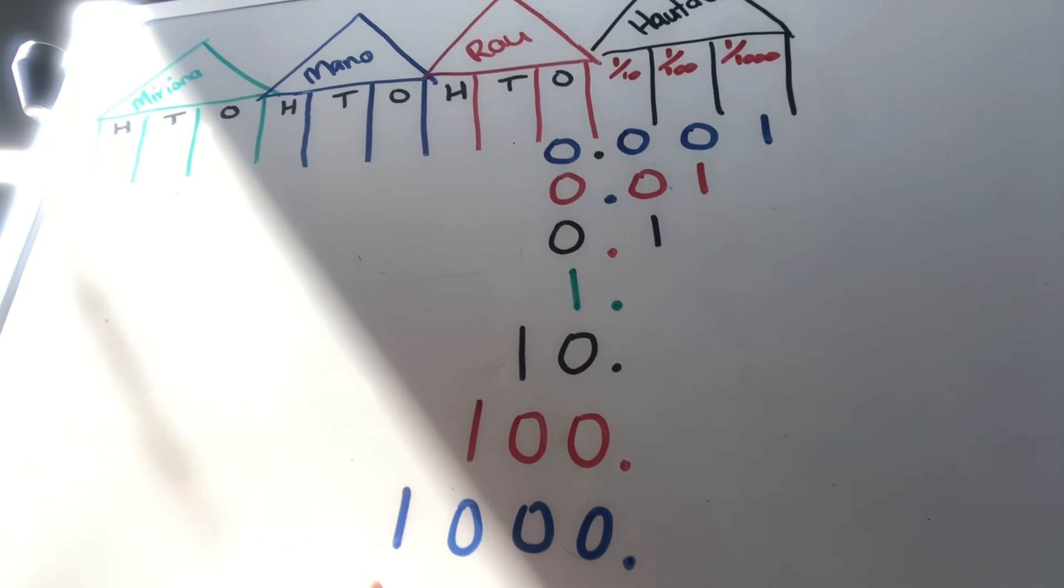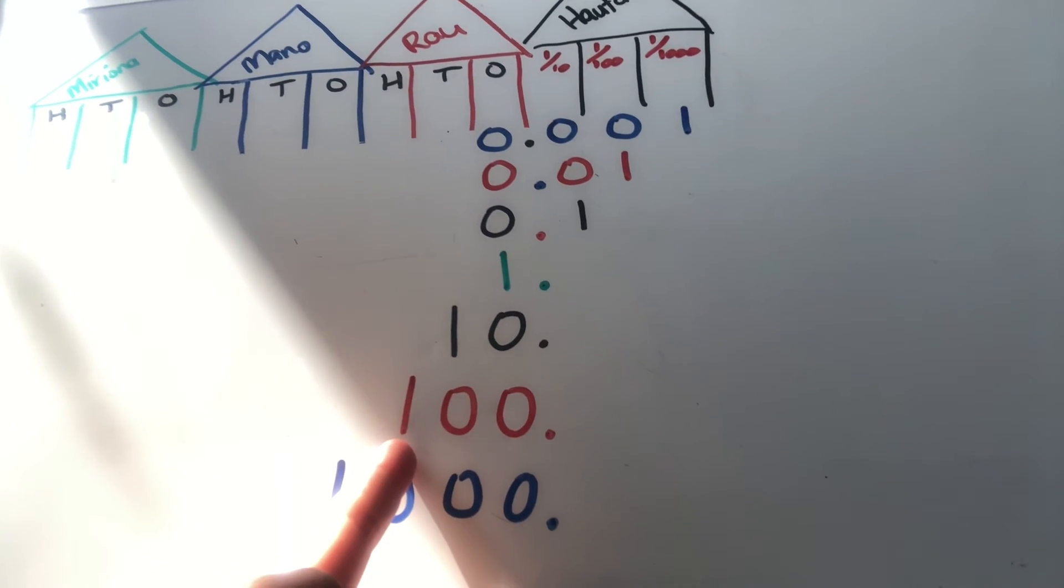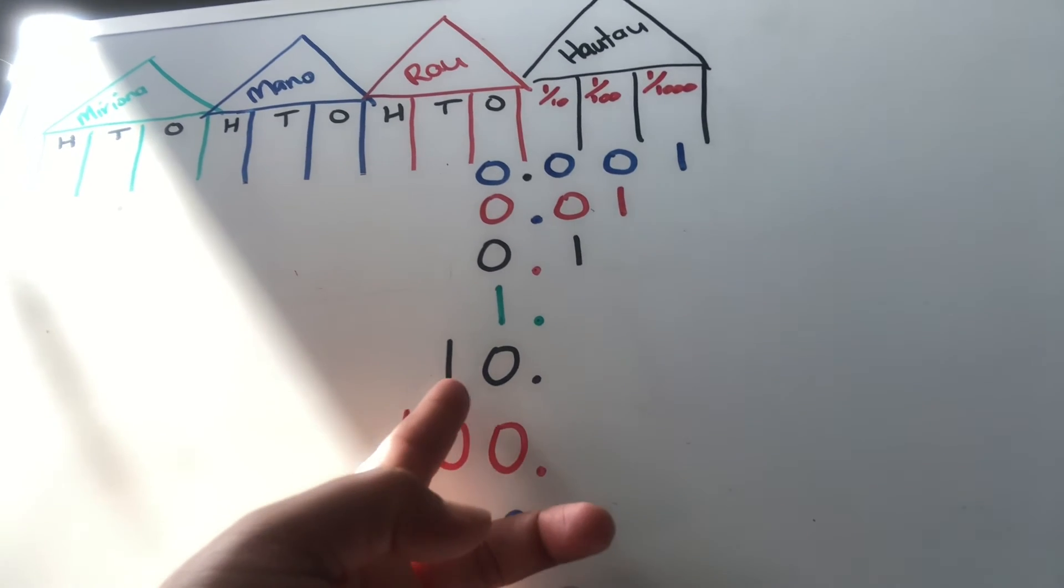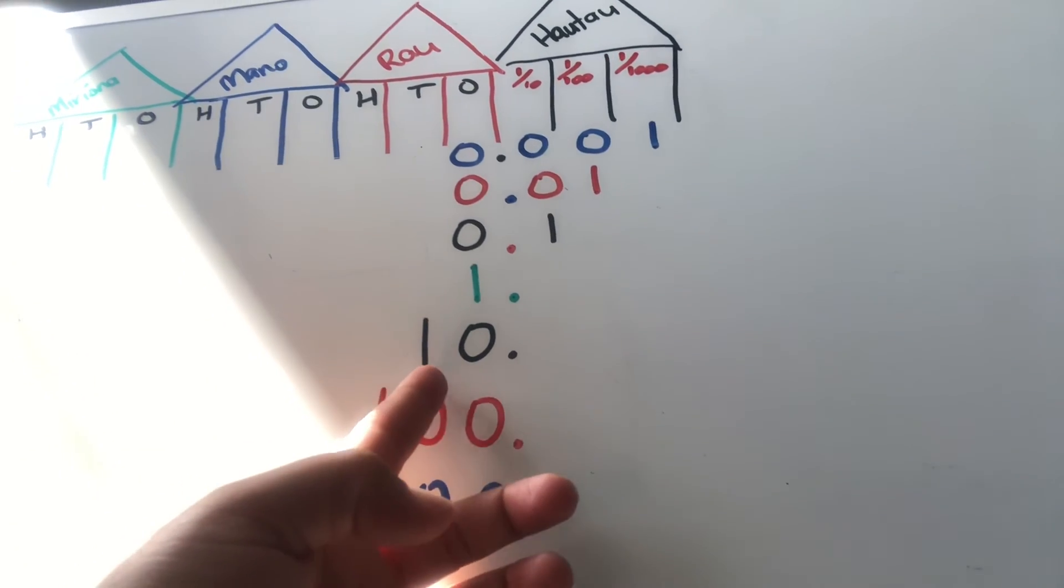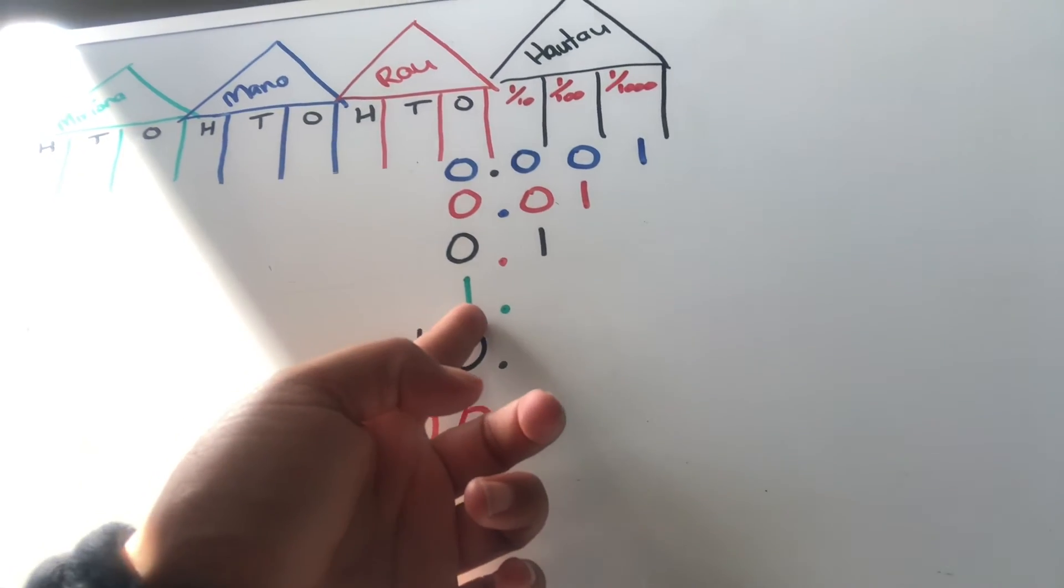If we divide 1000 by 10, we get 100. 100 divided by 10 gives us 10. 10 divided by 10 gives us 1. And so on and so forth.